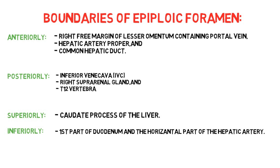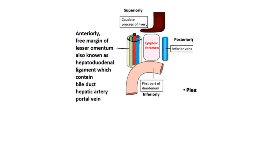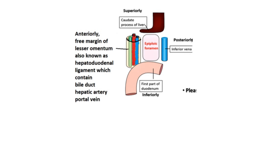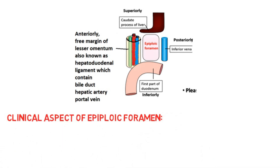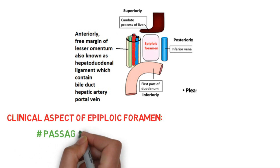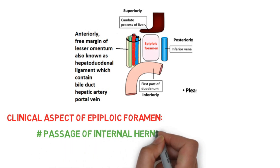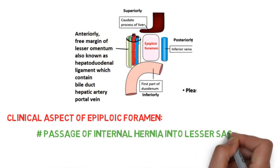A figure is provided here so that we can understand the boundaries of the epiploic foramen more easily and clearly. The epiploic foramen is shown in the middle, with the anterior, posterior, superior, and inferior parts labeled in the diagram. The clinical aspect of the epiploic foramen is the passage of internal hernia into the lesser sac, which takes place via the aditus.